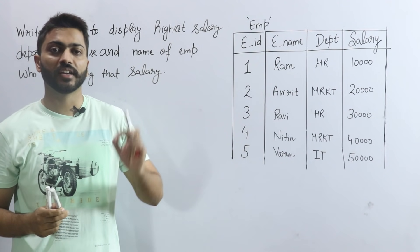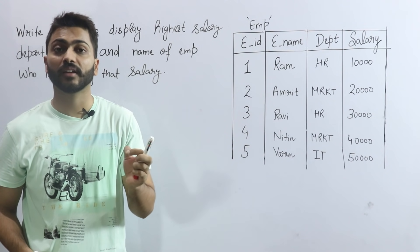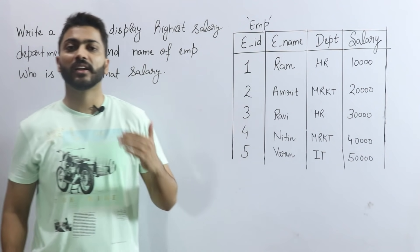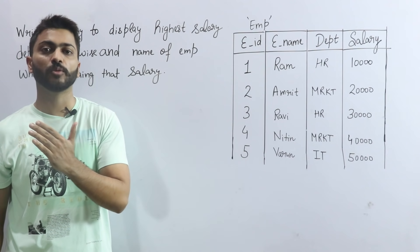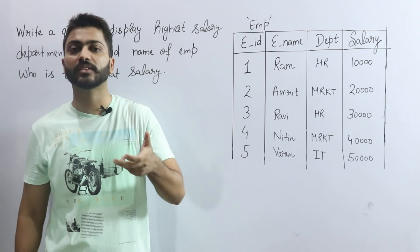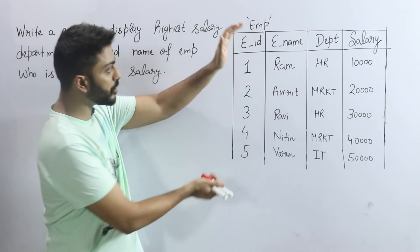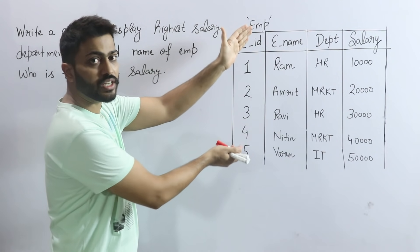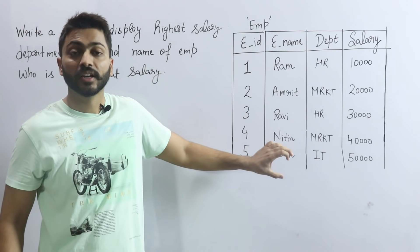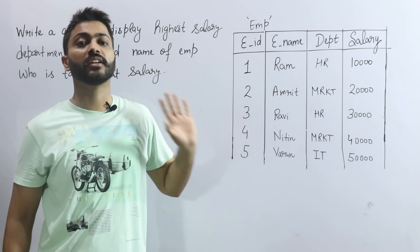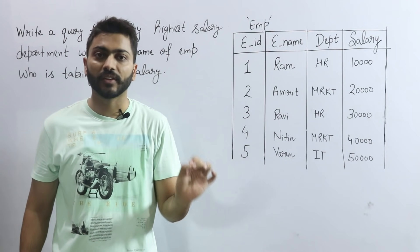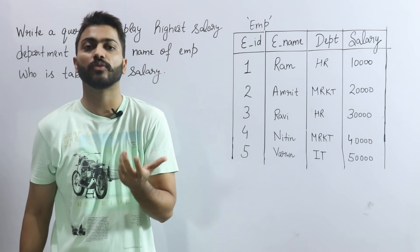We have to display the highest salary in each department. We have already discussed in the query part series how to find the highest salary. So if we have a given table where employee data is saved, how do we find the highest salary from that employee data?